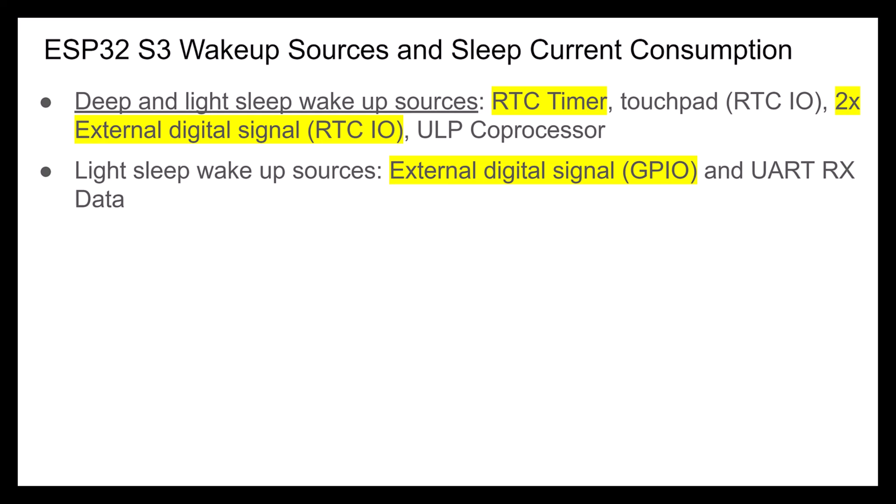Before going into sleep, you specify wake-up sources. What's nice is the ESP32 lets you configure more than one wake-up source — you can combine two different pins, different logic levels, a timer wake-up along with a digital pin wake-up. For both deep sleep and light sleep, wake-up sources include the RTC timer, a touchpad function on an RTC IO pin, an external digital signal level change on RTC IO pins, and a ULP coprocessor function where you can run assembly code to monitor things like an ADC to trigger wake-up.